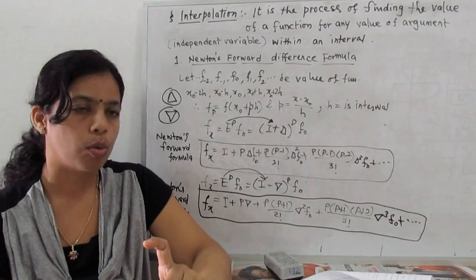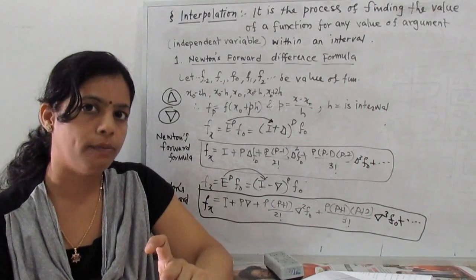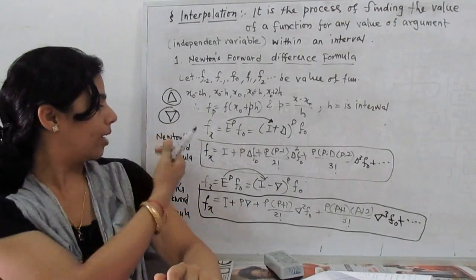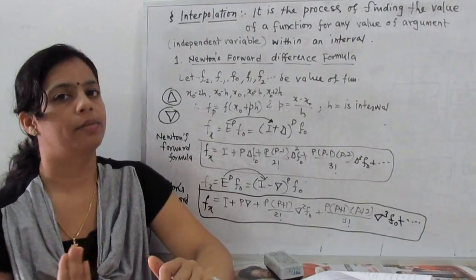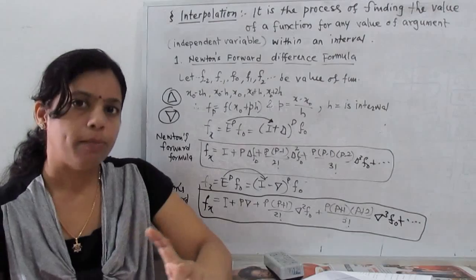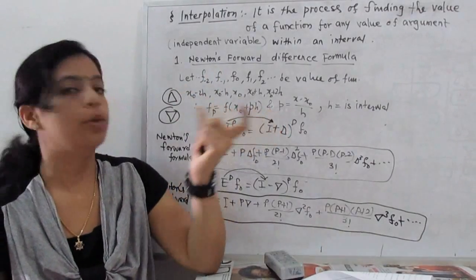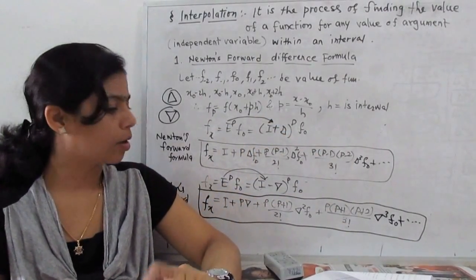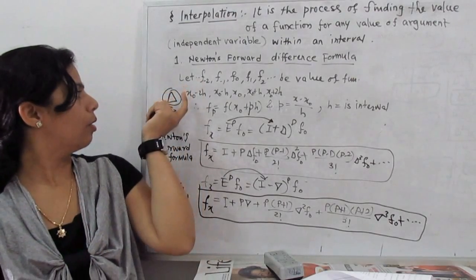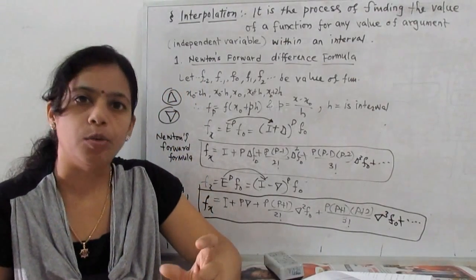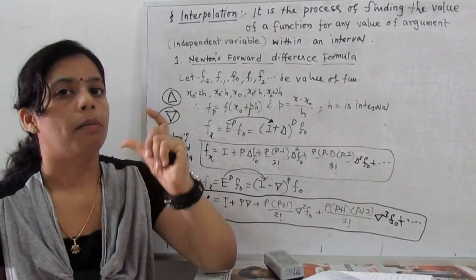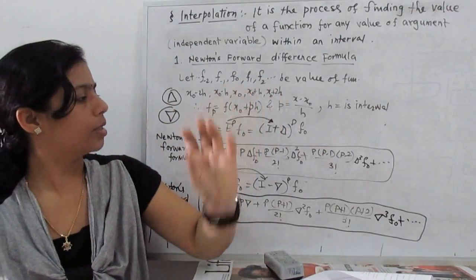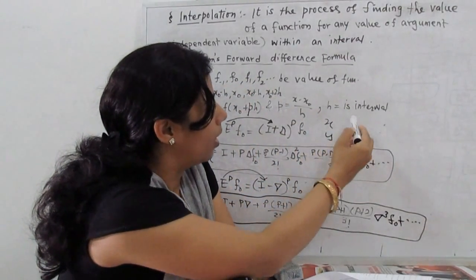So we have two formulas for finding the value of a function at any given range of x. Now I will show examples on Newton's forward formula, and after that we go to Newton's backward formula. One important thing: where do we use the forward formula and where do we use the backward formula? The forward operator formula is used for interpolating terms near to the beginning entries.